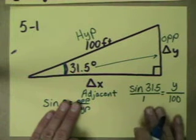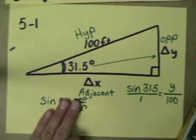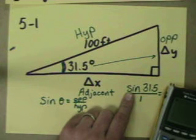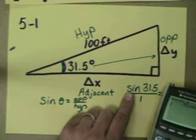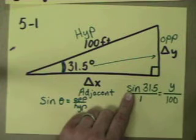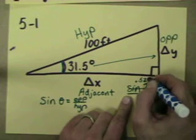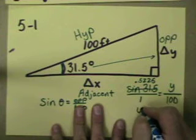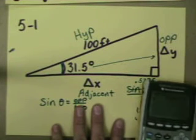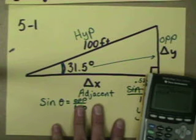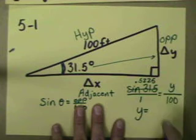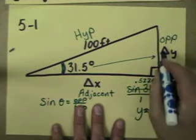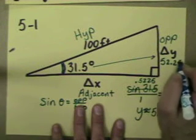This should look kind of familiar to the way the tangent looked. And so I'm going to go ahead and solve by plugging in, checking the mode first. I'm in degree. And I'm going to find out what sine of 31.5 is. It is about 0.5225. So I'm going to replace that with 0.5225. And now I'm going to do my cross multiplication. 1 times y is y, and 0.5225 times 100 is about 52.25. So now I know this side is 52.25 or pretty close to that.